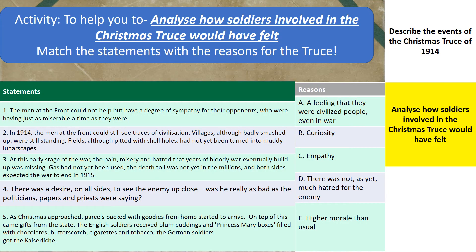Okay, so we should now be able to describe the events of the Christmas Truce in 1914. Our second aim for today is to analyse how soldiers involved in the Christmas Truce would have felt. To help you do this, match the statements with the reasons for the truce — you have five statements on the left-hand side to match with the reasons. This will help you think about how soldiers might have felt. Pause the PowerPoint — this should take you about 15 minutes.